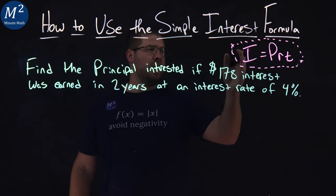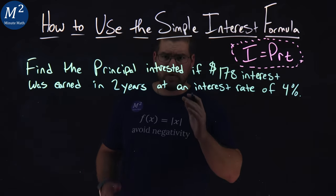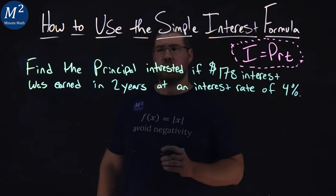We have a formula for Simple Interest: I equals PRT. Let's go find each one of these values within this word problem.